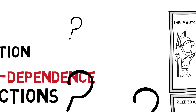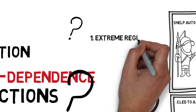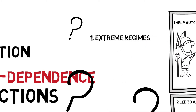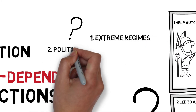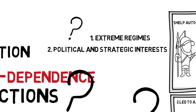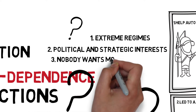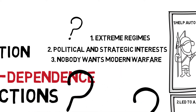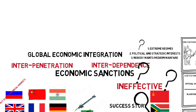In that case, why do Western countries, led by the United States, continue to impose economic sanctions on some countries? Firstly, they cannot afford to ignore the extreme regimes of some countries. And second, because of their political and strategic interests. Last but not least, the economic and social upheavals brought about by modern warfare are even worse. For these reasons, many feel that the only viable option is imposing economic sanctions.